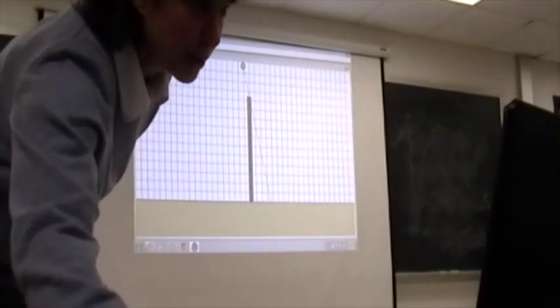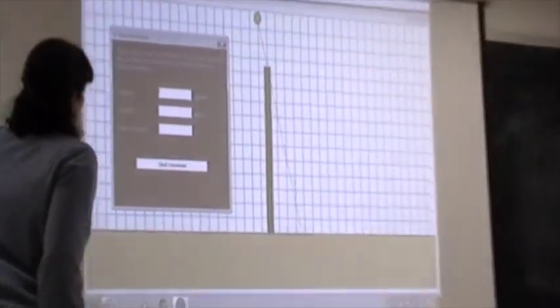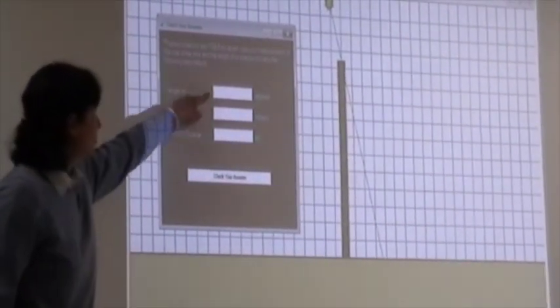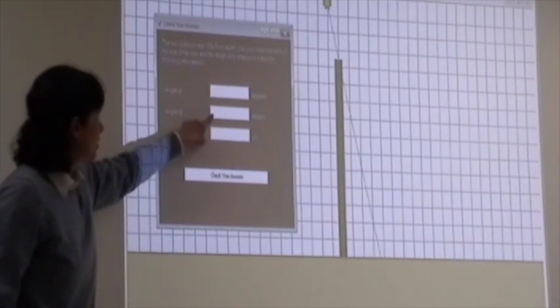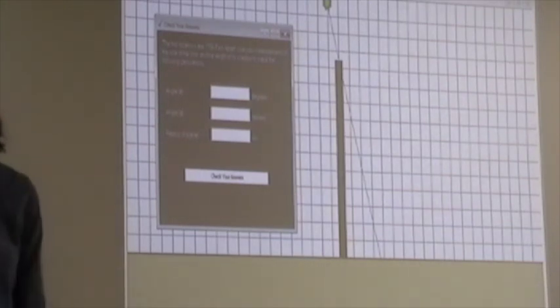When you go to the check your answers box, it will tell you how far apart these two locations are. It will ask you to report your angle in degrees, your angle in radians, and your radius of the planet in kilometers.